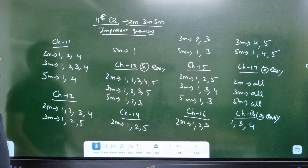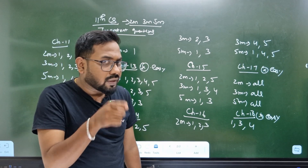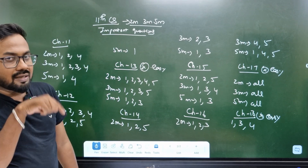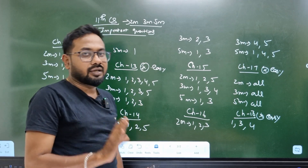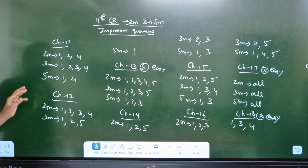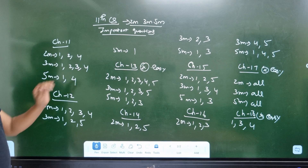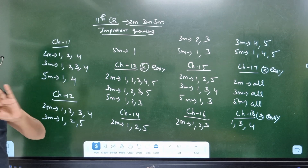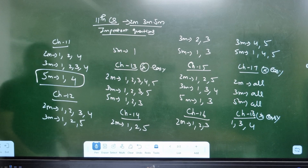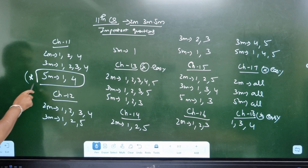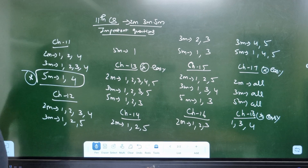What we have done in the 11th CS? We have chapters 11 to 18. Mark breakdown: 1, 2, 4, 1, 2, 3, 4 — 3 mark. We have 5 mark. If you study chapter 12, it is important. Chapter 12 is important.